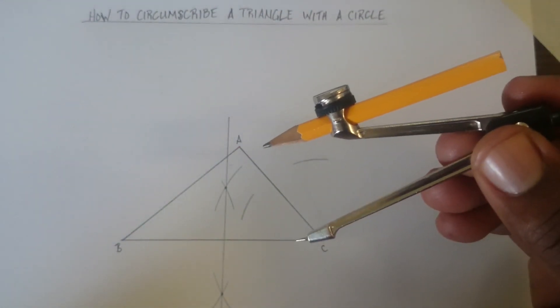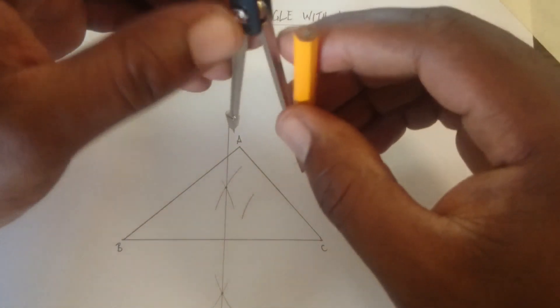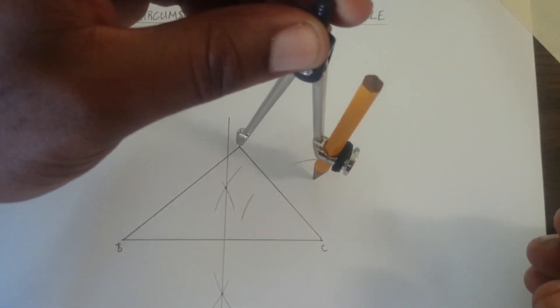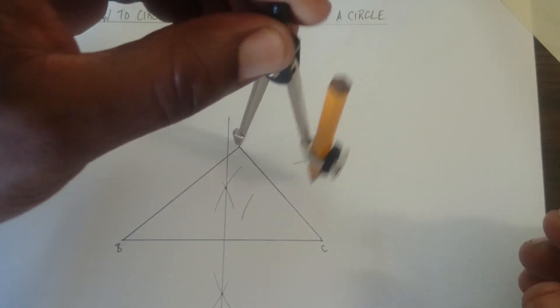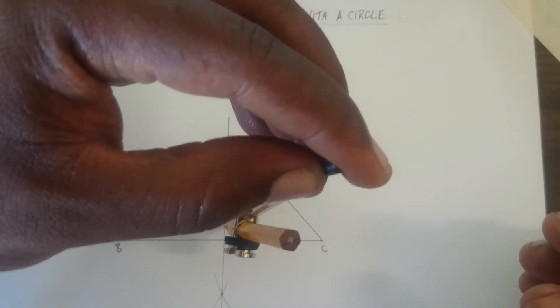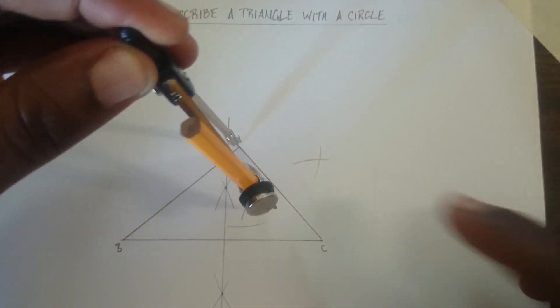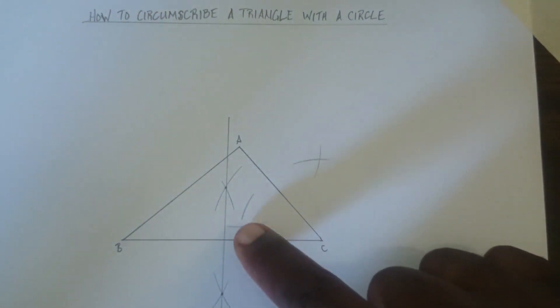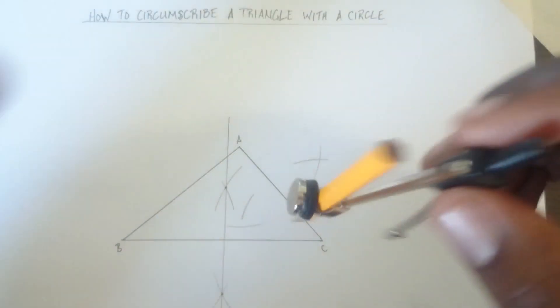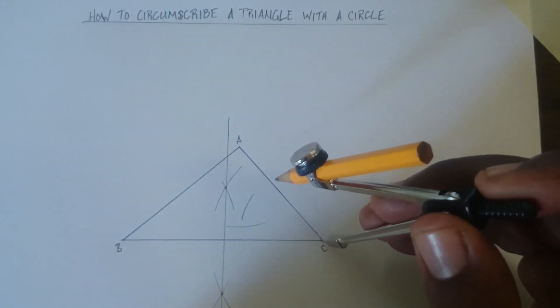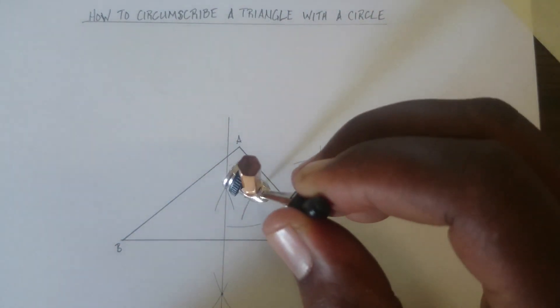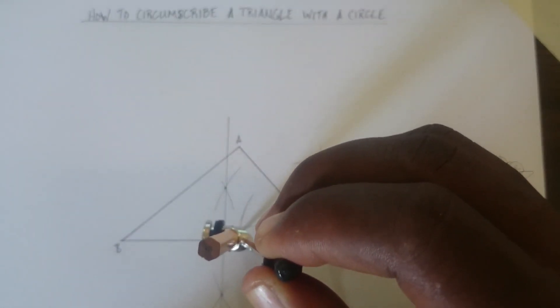Take your compass, make sure it doesn't move, and put it at A because it's AC we are bisecting. Make arcs on both sides. If you can see, this one connects but this one does not connect. So we have to take the compass, make sure it doesn't move, put it back at C, and connect the arcs.